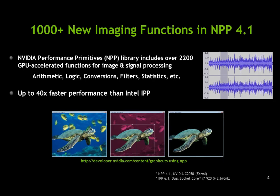We've added over 1,000 new image and signal processing functions to the NVIDIA Performance Primitives library, bringing the total up to over 2,200 functions that can be used for a wide range of image and signal processing algorithms, ranging from basic filtering to advanced workflows like the grab-cut example you see in the series of turtle images here.